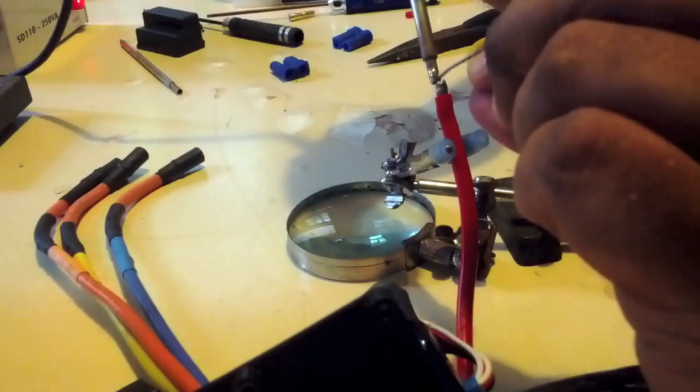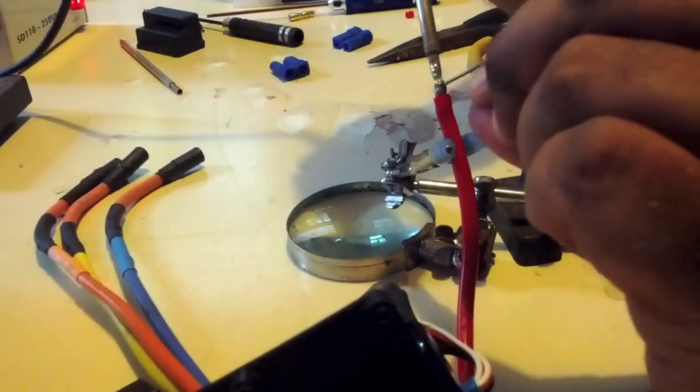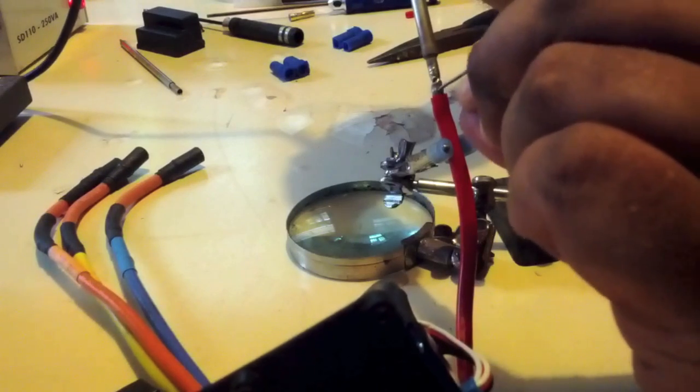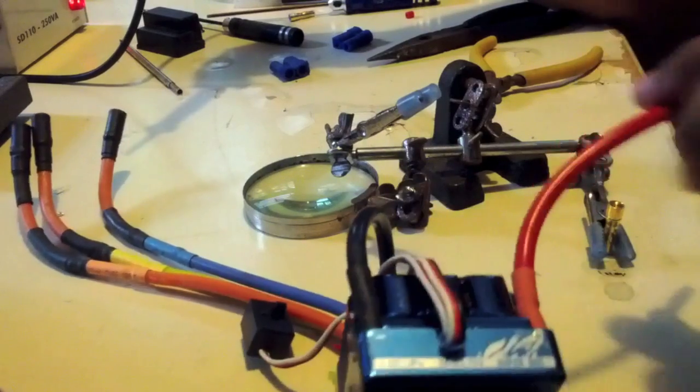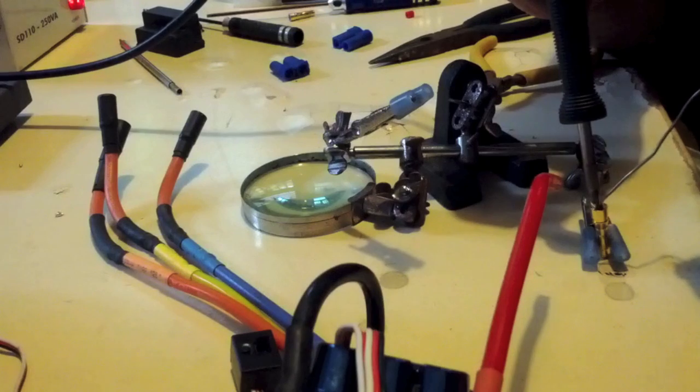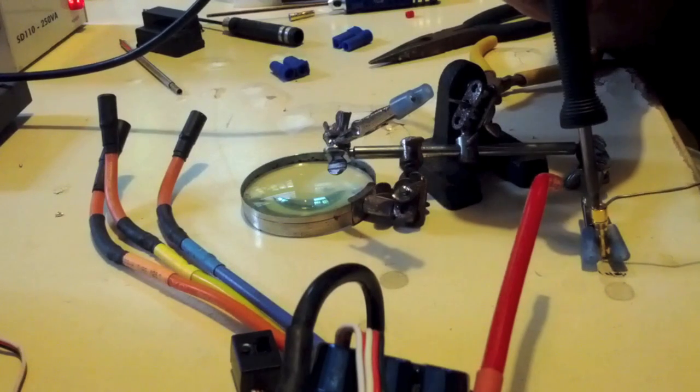The first thing to do is to tin the tips of the wires. Always hold the soldering iron, the tip to the wire, so you heat up the wire, and then you essentially touch your solder onto the wire which is heated up.